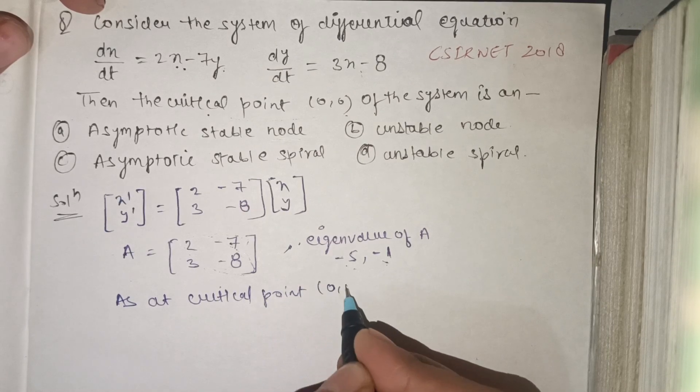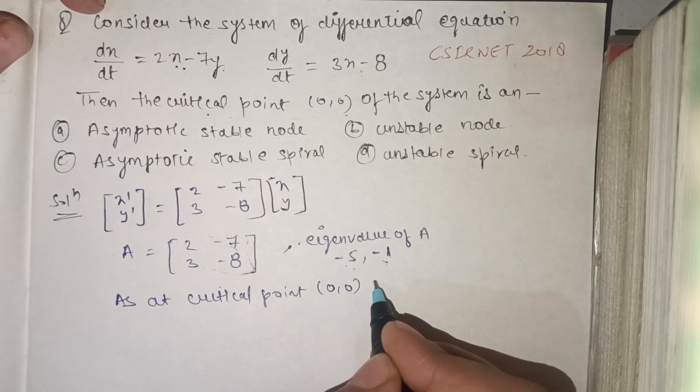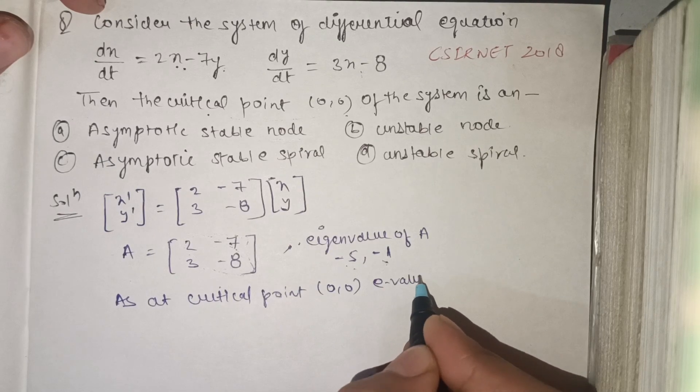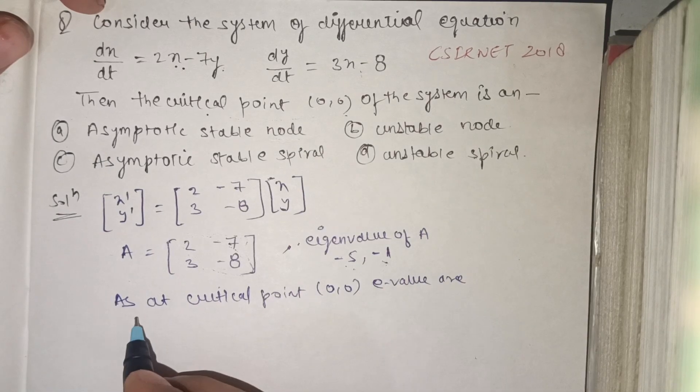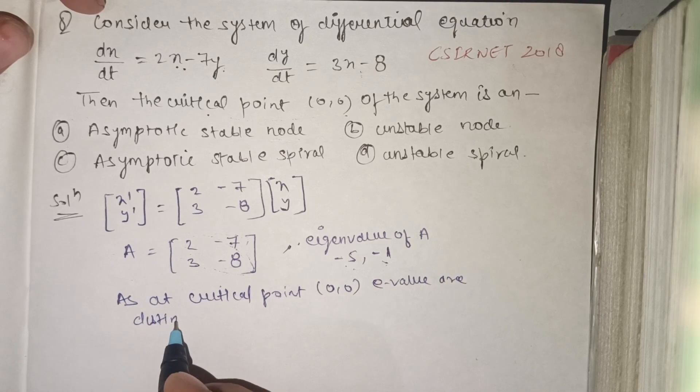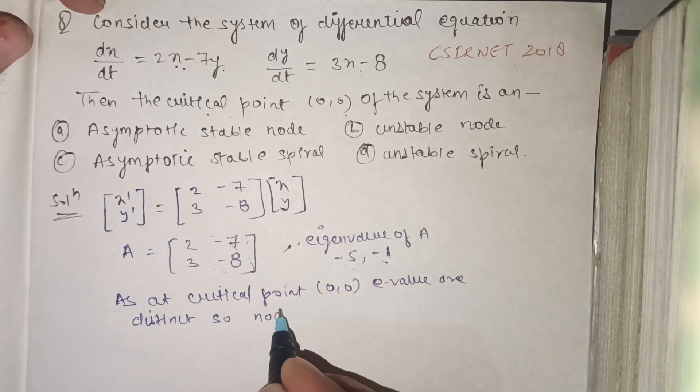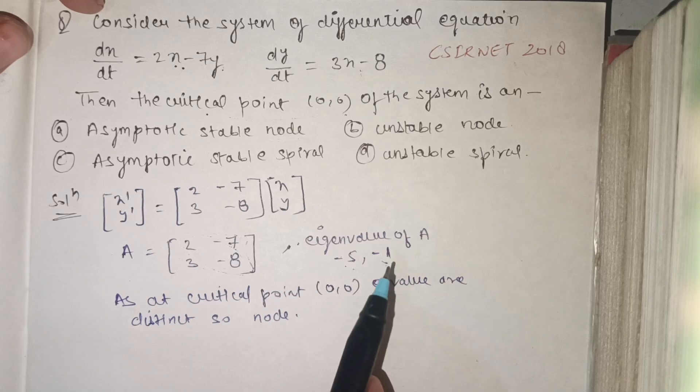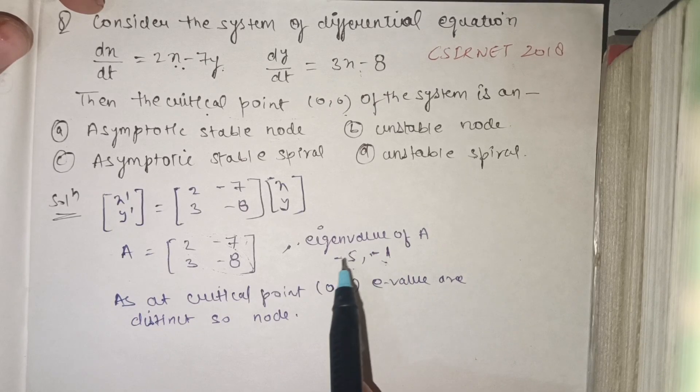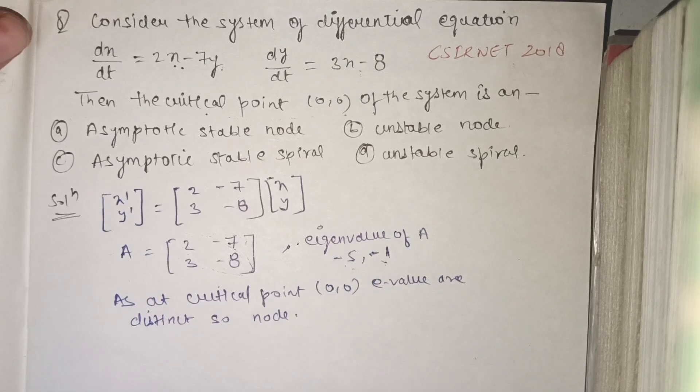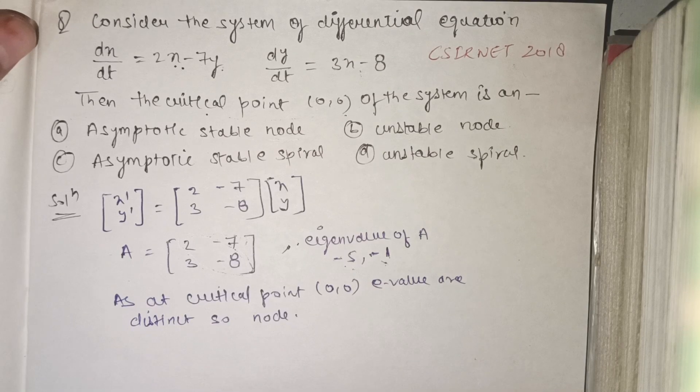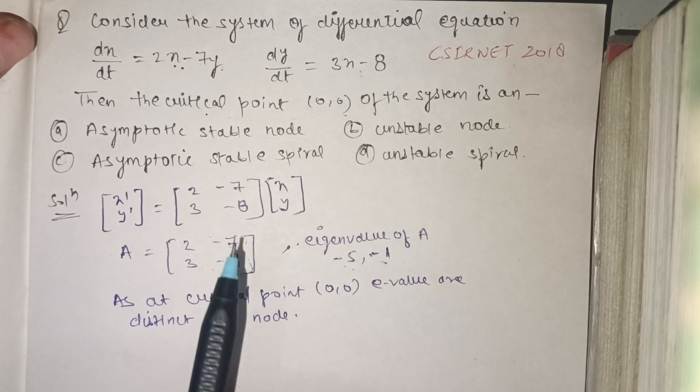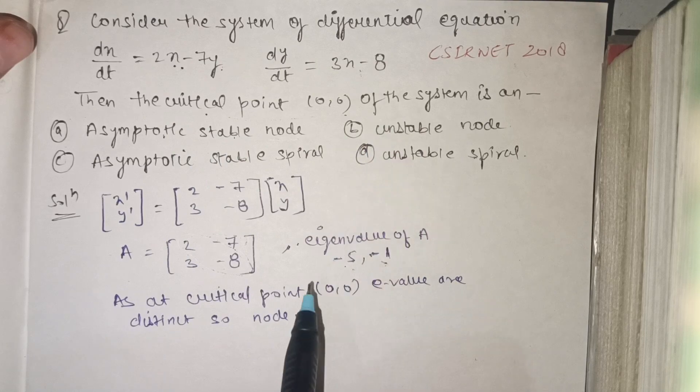As at critical point (0,0) the eigenvalues are distinct, we get a node. Since both eigenvalues are negative, it is asymptotically stable nodes. So our option A is correct.